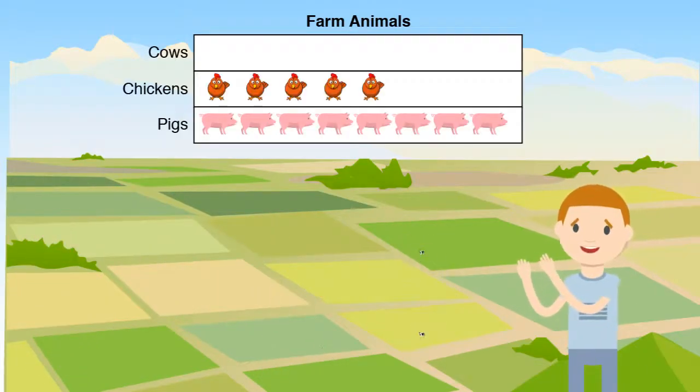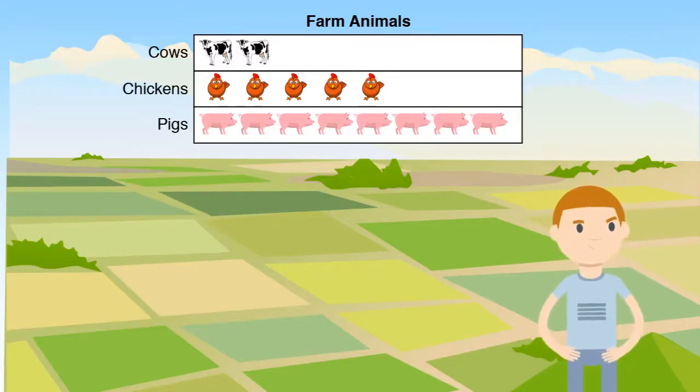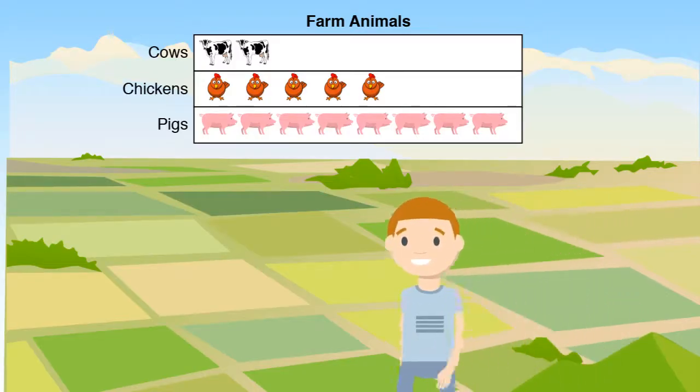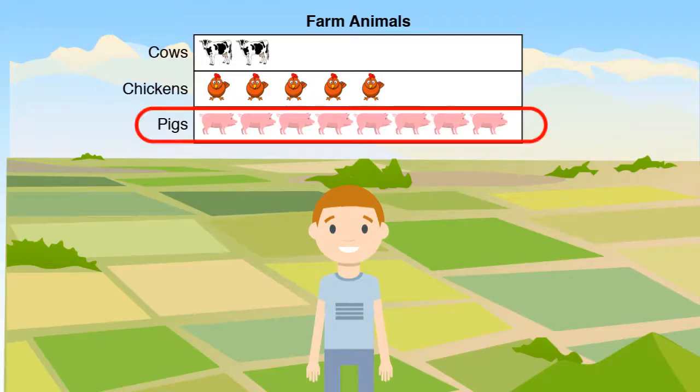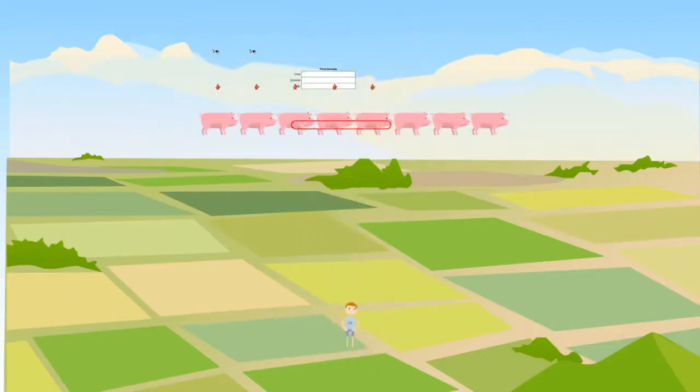Our last step is to draw a picture showing each animal. Now we can count the number of each animal on my friend's farm. Looking at this graph, my friend has the most of which type of animal? Awesome, she has more pigs than chickens and cows. There are more pigs shown on the picture graph.